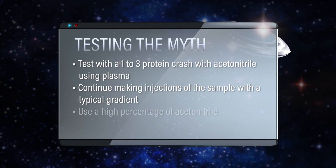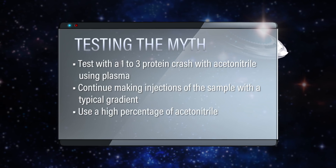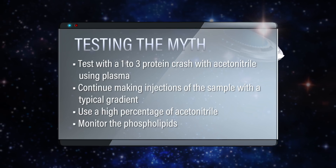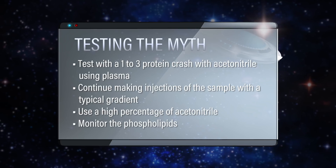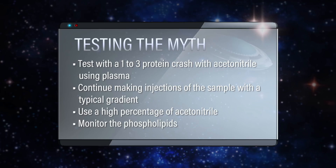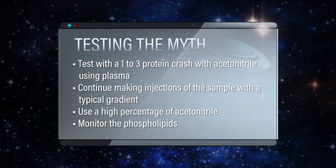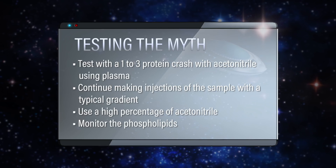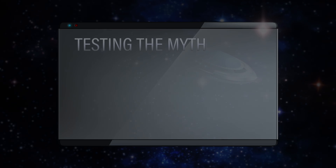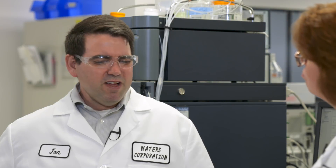We'll just keep making injections of this sample over and over again with a typical gradient used in bioanalysis, going to a high percentage of acetonitrile to potentially wash off the column. We'll monitor the phospholipids, since they're the major cause of matrix effects, and monitor the area count to see if it fluctuates.